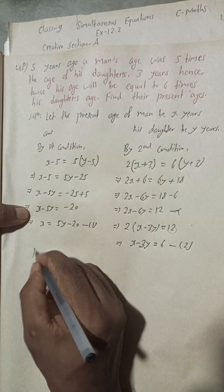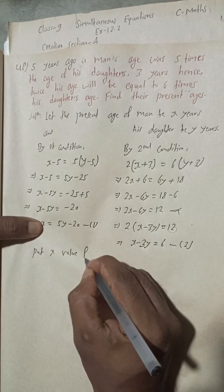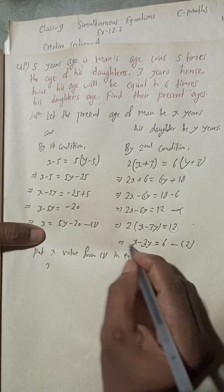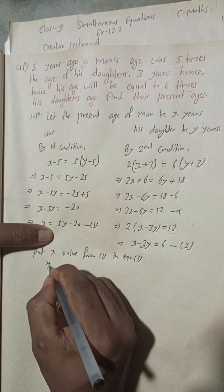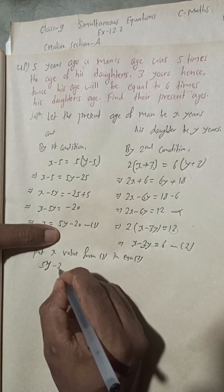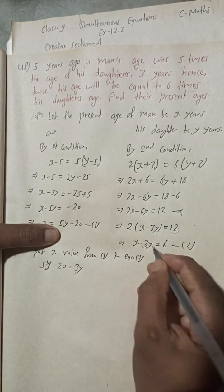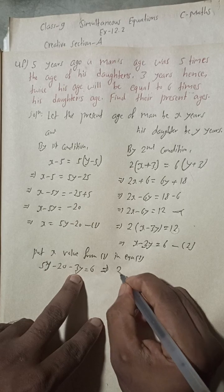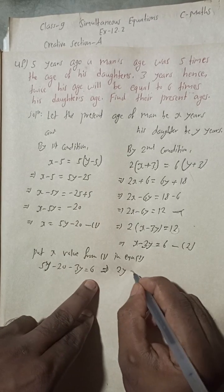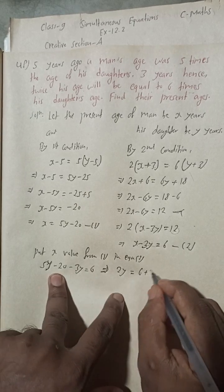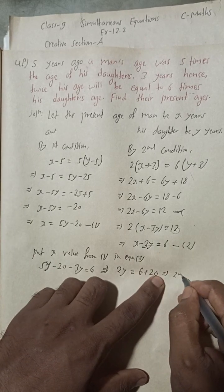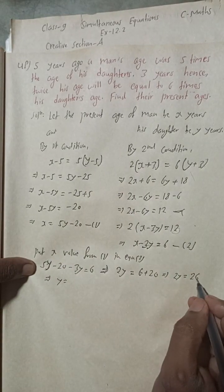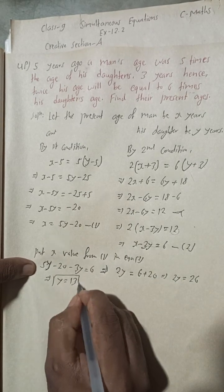Now substitute x from equation 1 into equation 2. The x value is 5y minus 20, so: (5y minus 20) minus 3y = 6. This implies 2y minus 20 = 6, so 2y = 26, therefore y = 13.